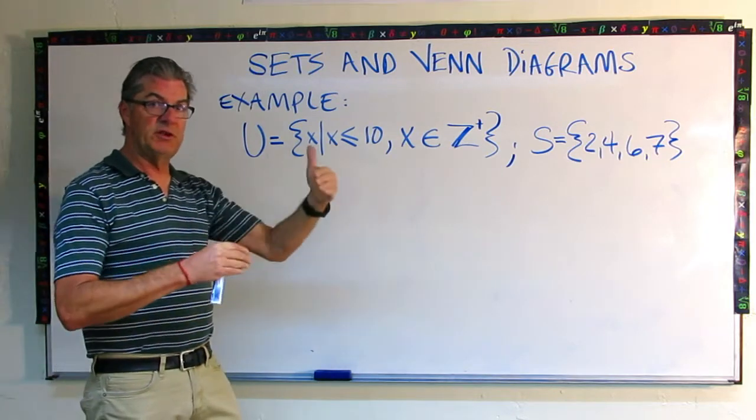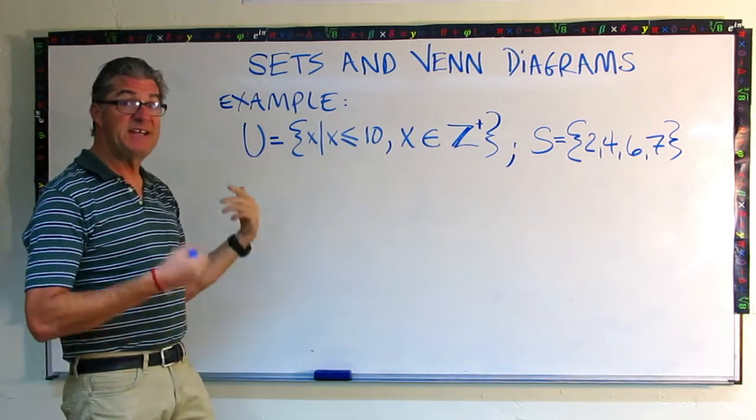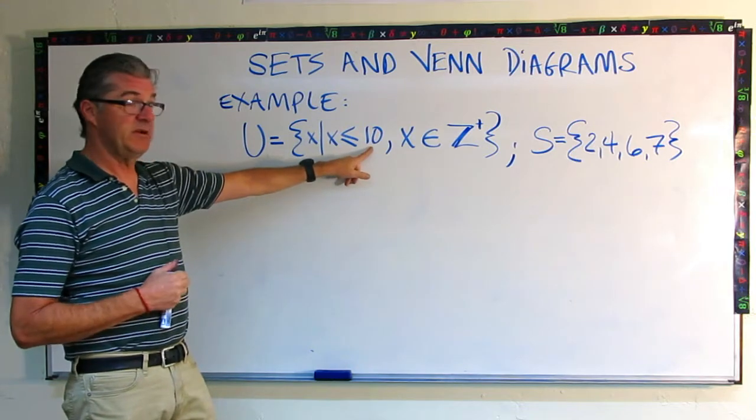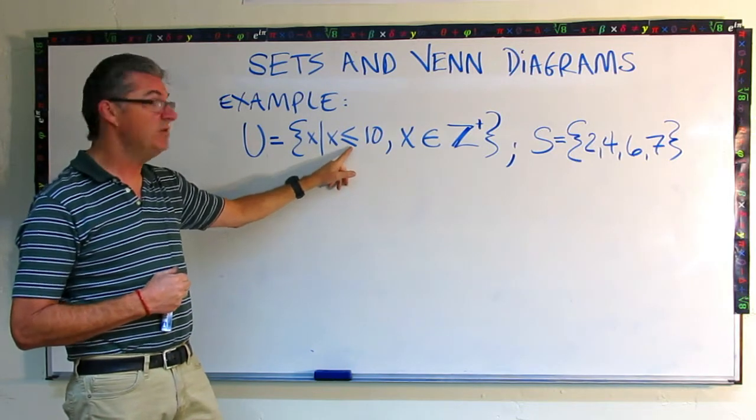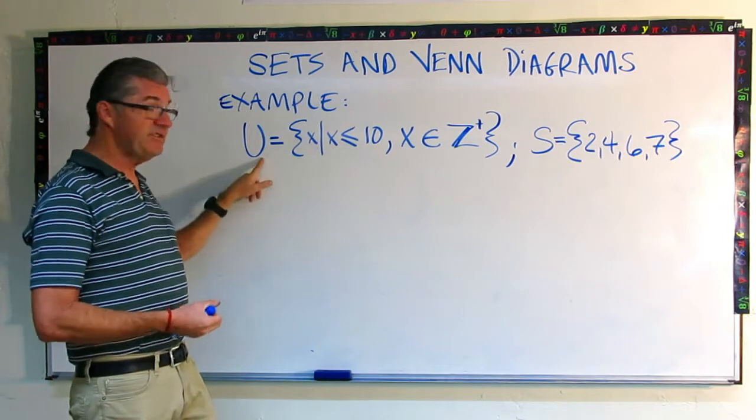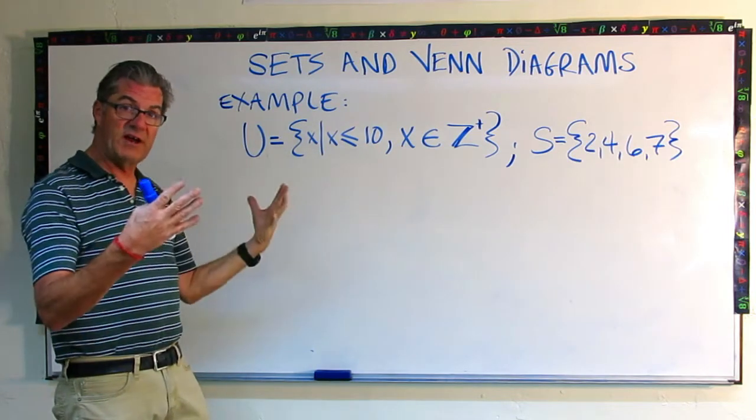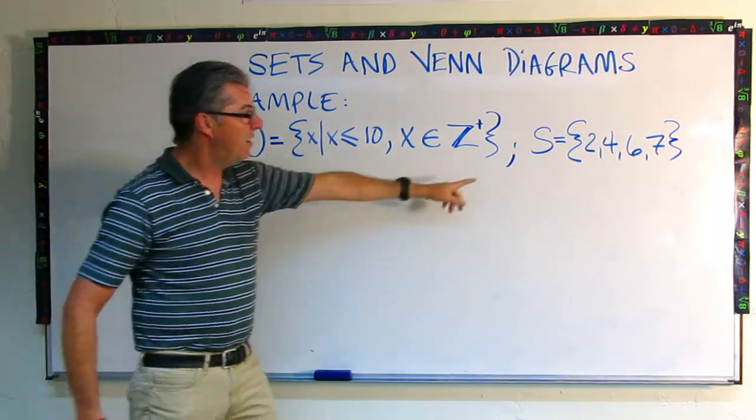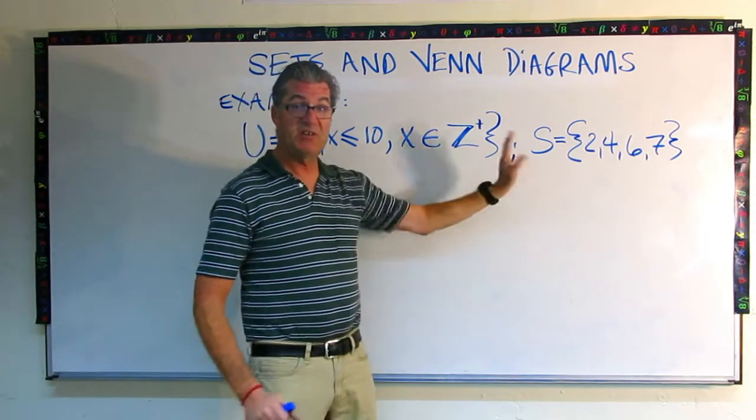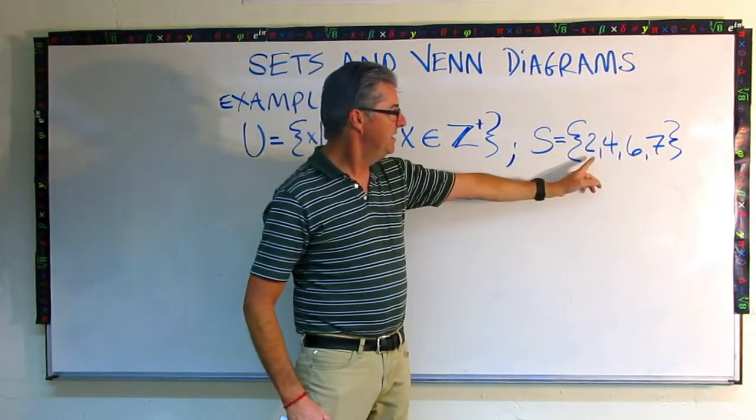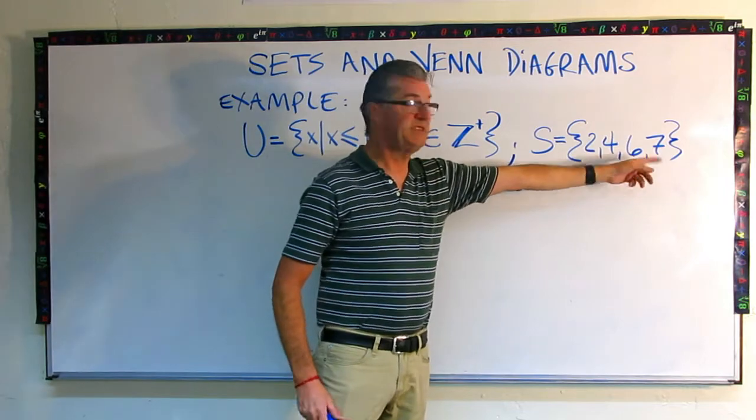So that's 1, 2, 3, 4, 5, 6, 7, 8, 9, 10 and we don't get bigger than 10. We can be 10. It's less than or equal to 10. So that's our universal set. That's going to be the whole rectangle of our Venn diagram. Now, our subset here is going to be just these four numbers. S is 2, 4, 6 and 7. So there's four numbers.